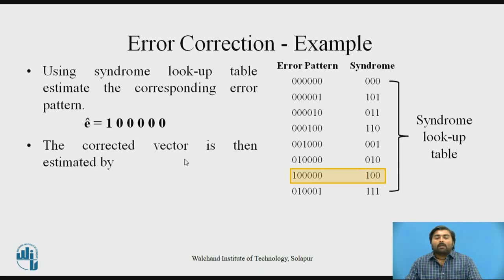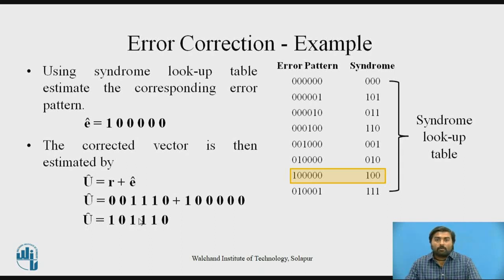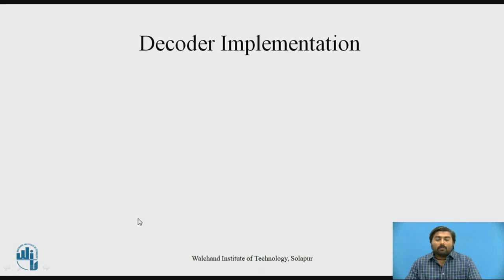The corrected codeword is estimated by adding the error pattern to the received vector: Û = R + Ê. The received vector is 001110 and Ê = 100000. Performing this modulo-2 addition gives the estimated codeword 101110, which is exactly the actual transmitted codeword.